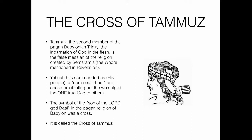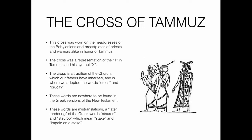The symbol of the son of the lord god Baal in the pagan religion of Babylon was a cross — the symbol of Tammuz, because he was the son of the lord. We know 'lord' in Hebrew means Baal, so it's called the cross of Tammuz. The cross was worn on the headdresses of the Babylonians, on the breastplates of the priests, and by warriors alike, in honor of Tammuz.